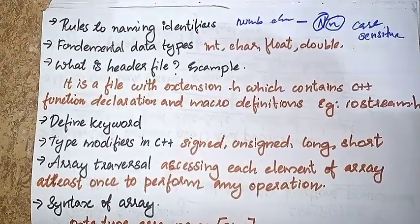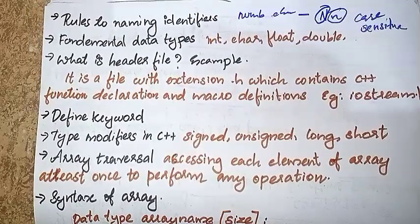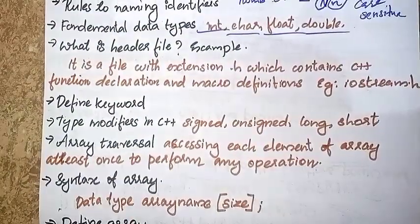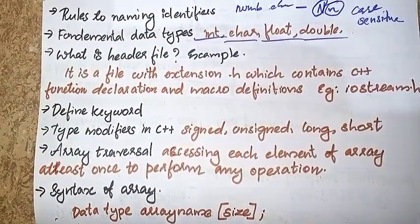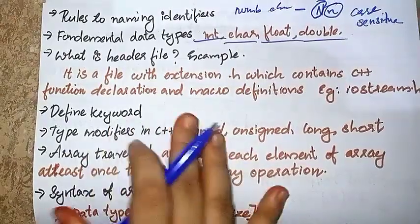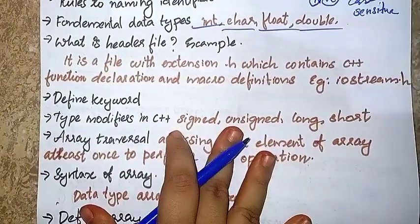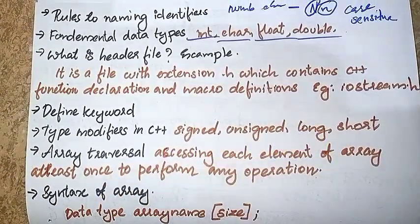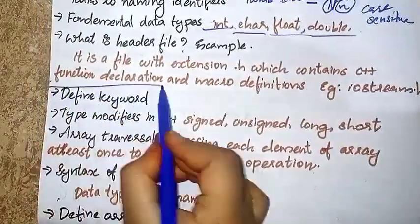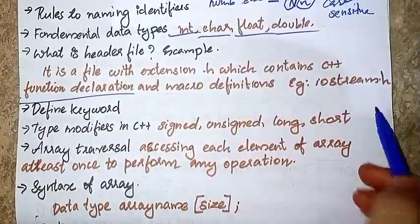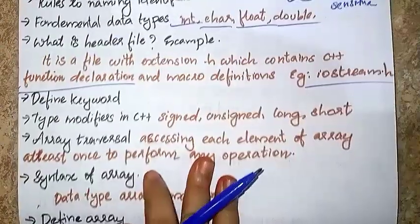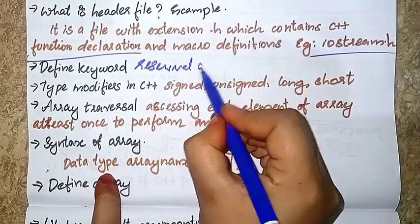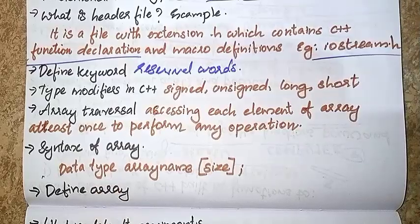The next one is fundamental data types of C++. Then what is a header file? A header file is a file with an extension that contains C++ function declarations. The next one is define keywords — keywords are reserved words.